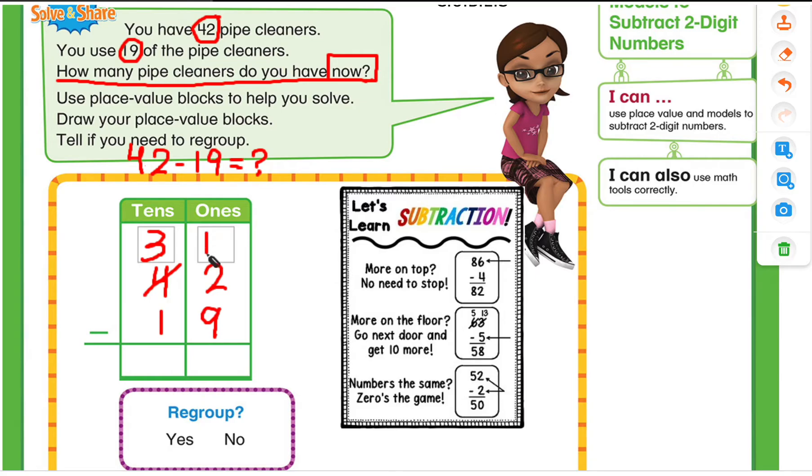And since we added the 10's to the 1's place value, this became 12. Now we can take away 12 minus 9, which is 3. 3 minus 1 is 2. And you can see that we have regrouped. Look, whenever we have more on the floor and we go next door, we actually regrouped.